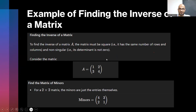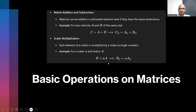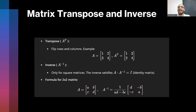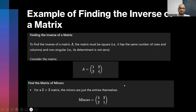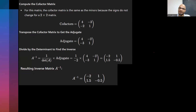The final step: multiply the adjugate by the inverse of the determinant. For matrix A = [1,2; 3,4], the determinant is (1×4) - (2×3) = 4 - 6 = -2. So the inverse is (1/-2) × [4,-2; -3,1]. The key point: the inverse of matrix A is denoted A^(-1). When you multiply a matrix by its inverse, you get the identity matrix — a square matrix with 1s on the diagonal and 0s everywhere else.